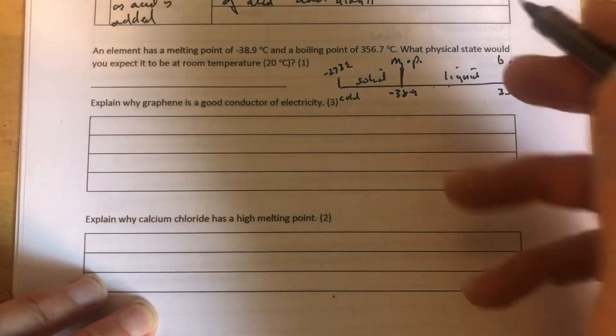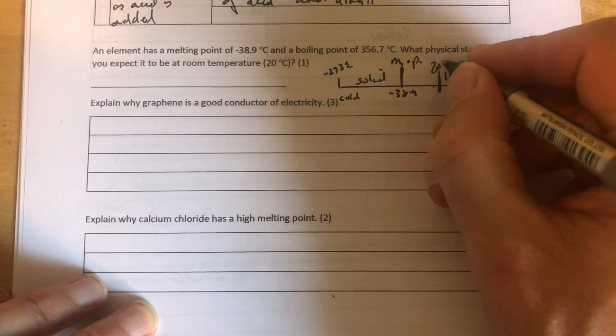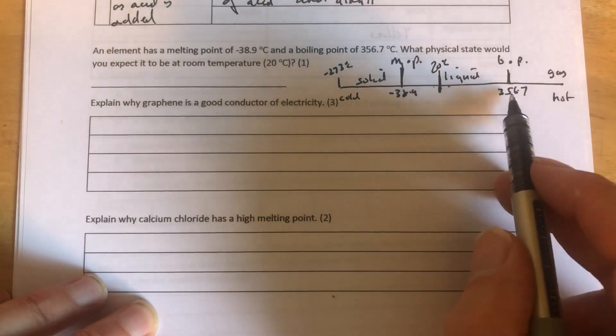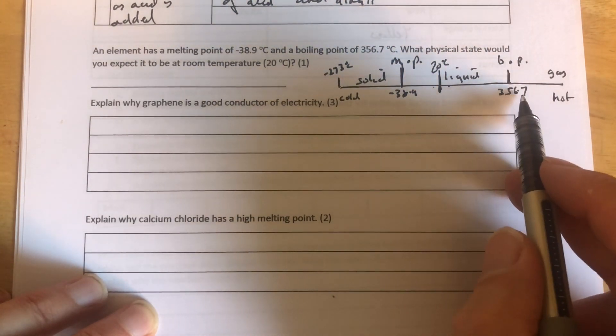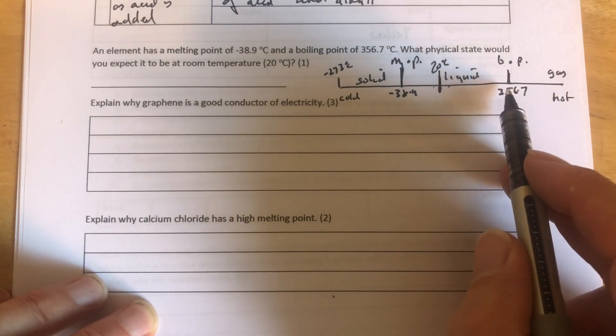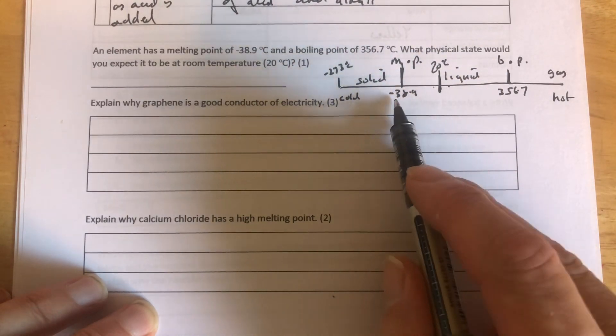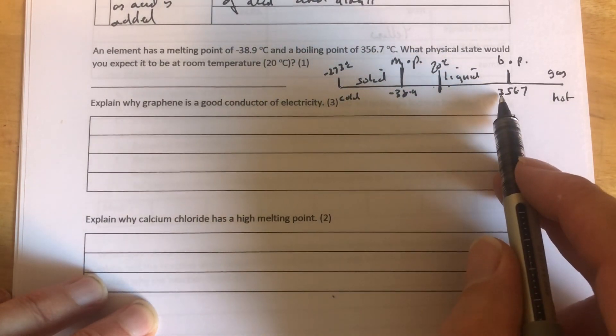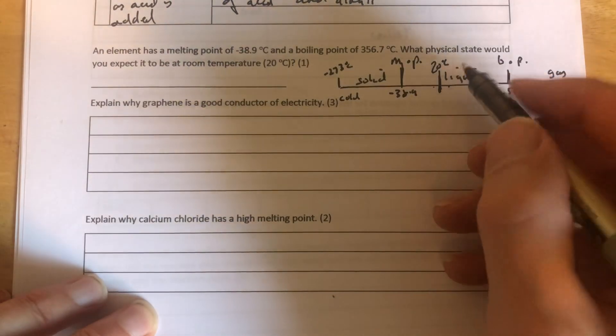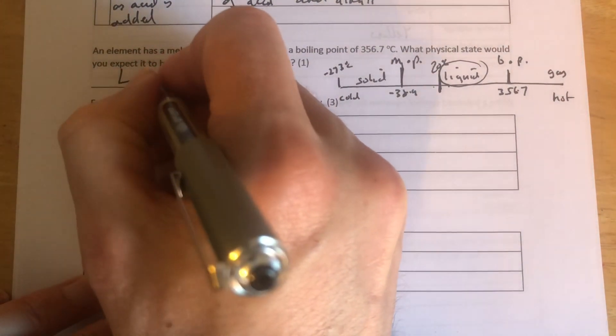So 20 is going to be roughly about here, 20 degrees C. Certainly going to be less than 356.7, because we'd have to go 20, 100, 150, 250, 300, 350, 356. So 20 is less than that. So 20 is between these two numbers here, minus 38.9 and 356.7. Bang in the middle of the liquid state. Our answer there is liquid.